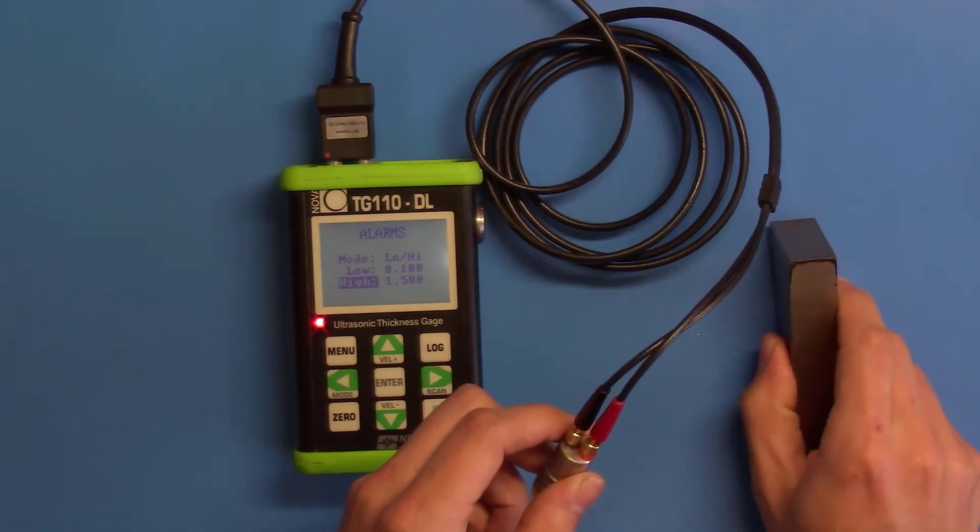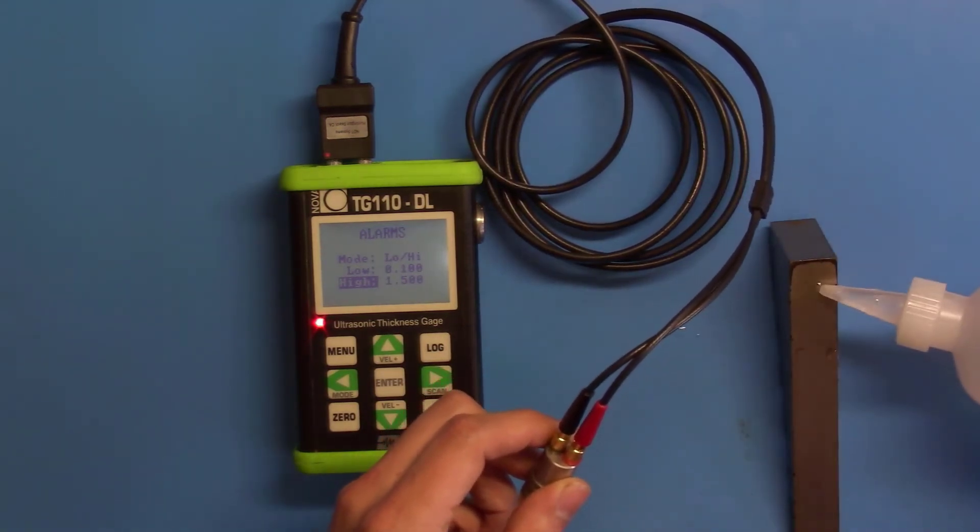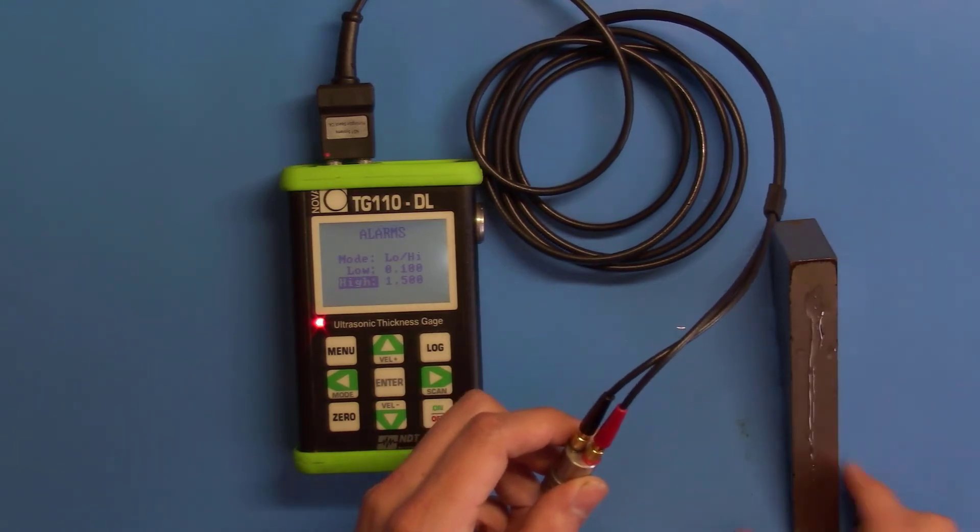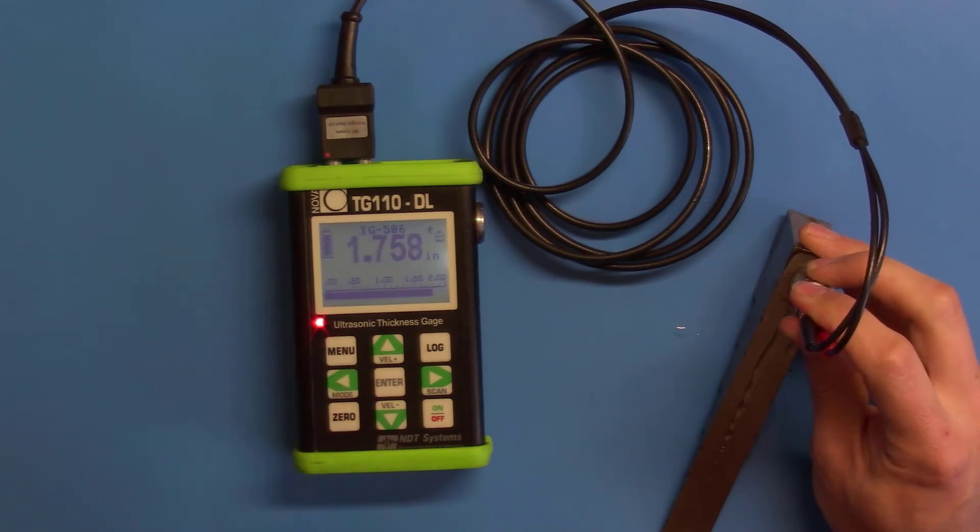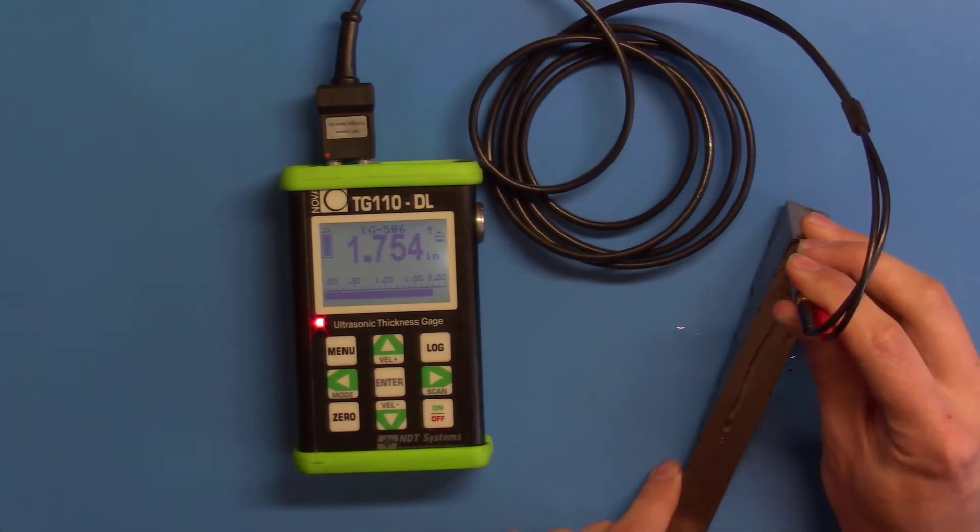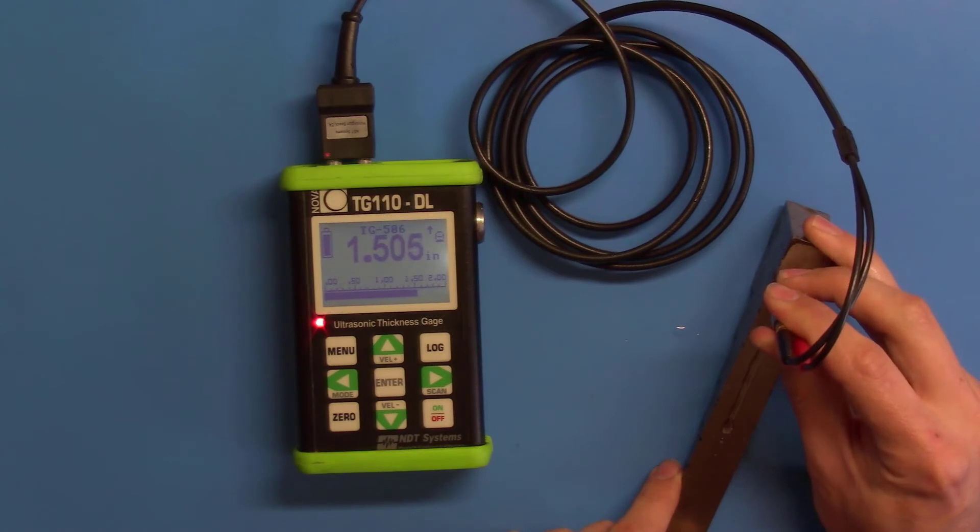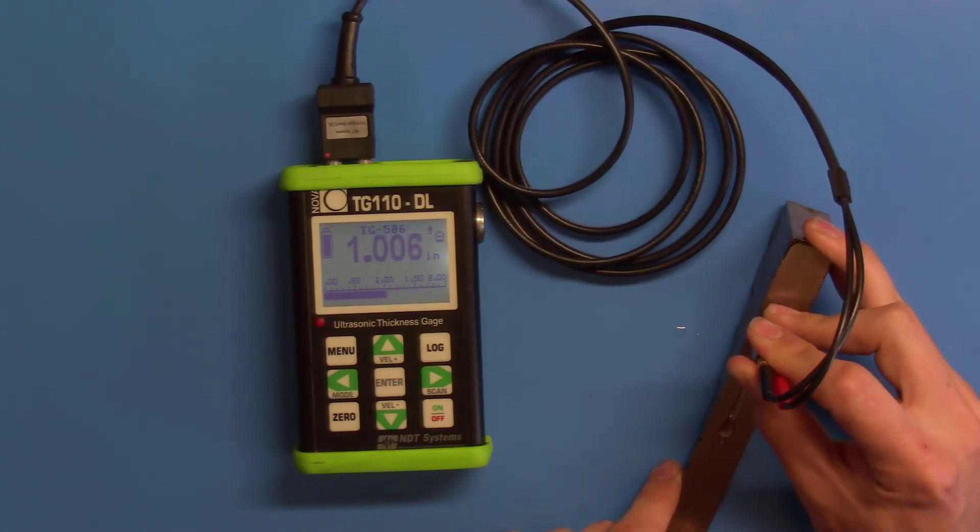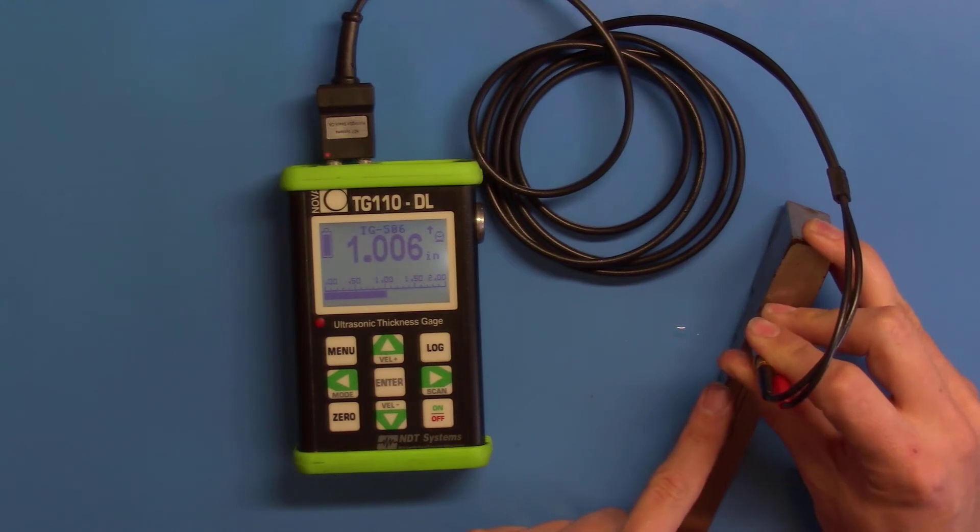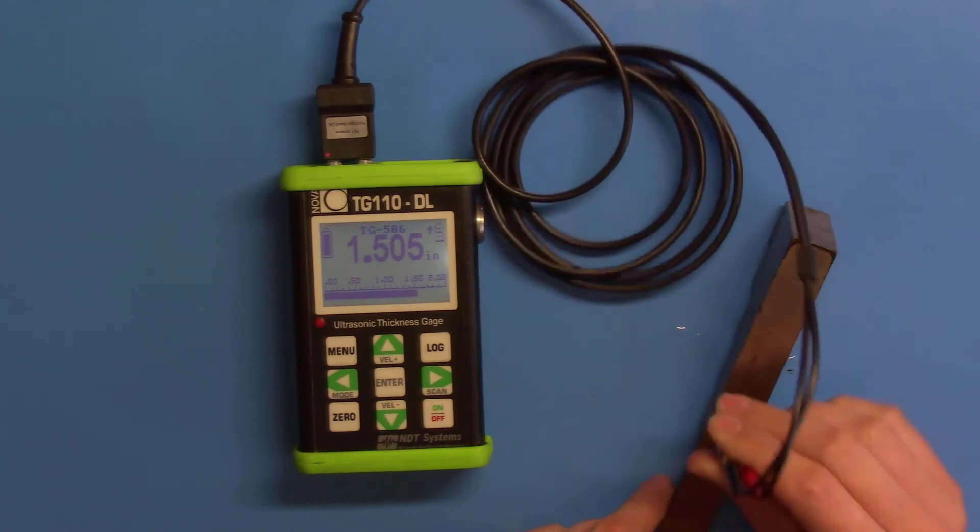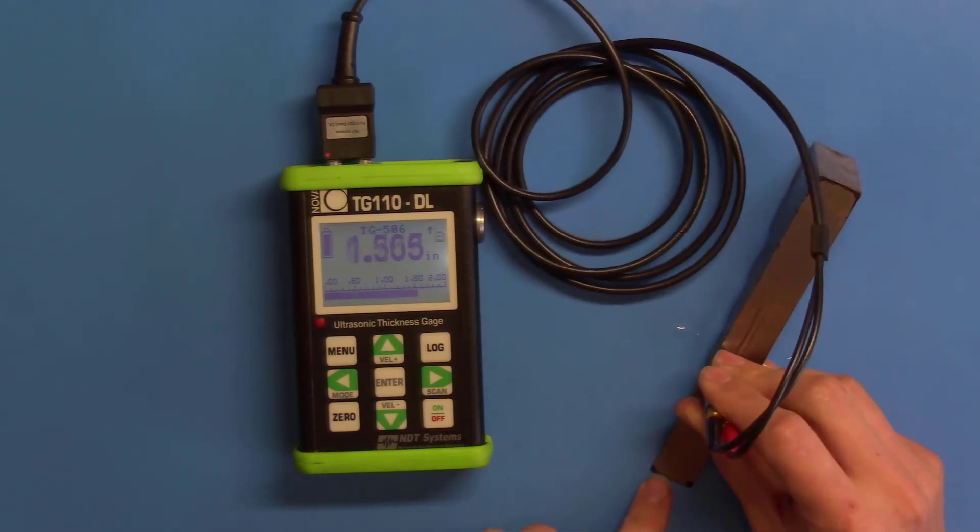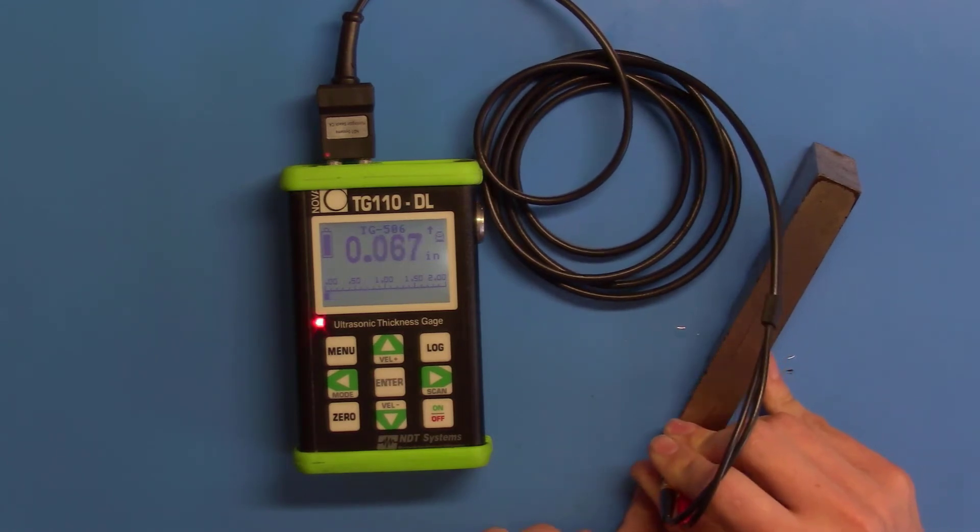Now I have this part here. And say I don't know what the thicknesses are. I can go ahead and couple my probe to the surface. Push menu to go back to the main measurement menu. And when I couple my probe, it'll display a thickness reading. Notice when we go to 1 inch, and then to 1.5 inches, the alarm light comes on. And if I go down here, go from 0.25 inches down below 0.1 inch, the alarm light comes on again.